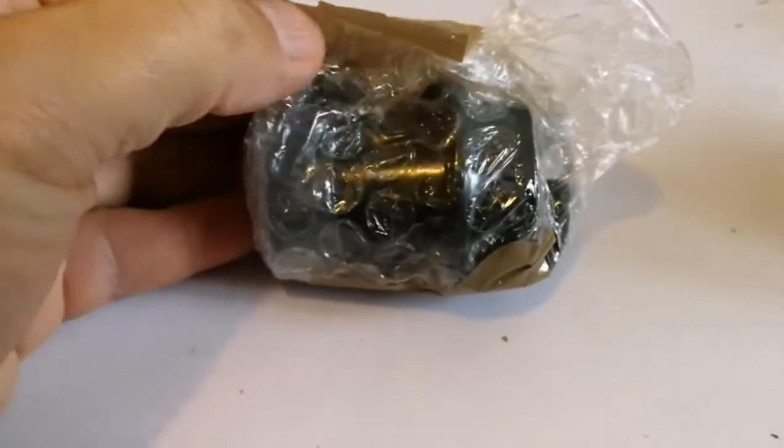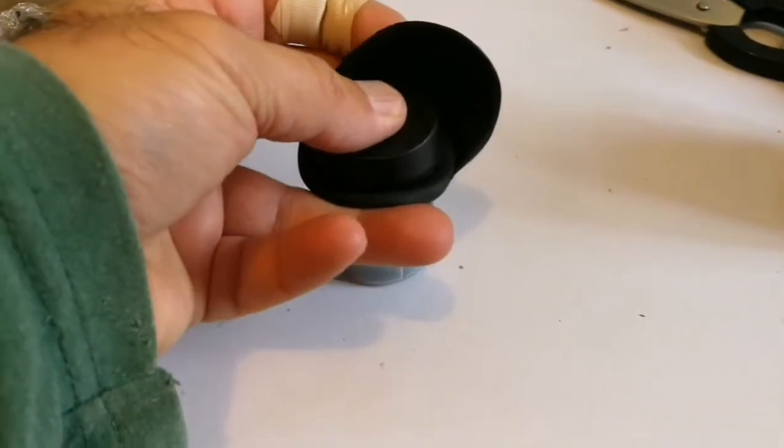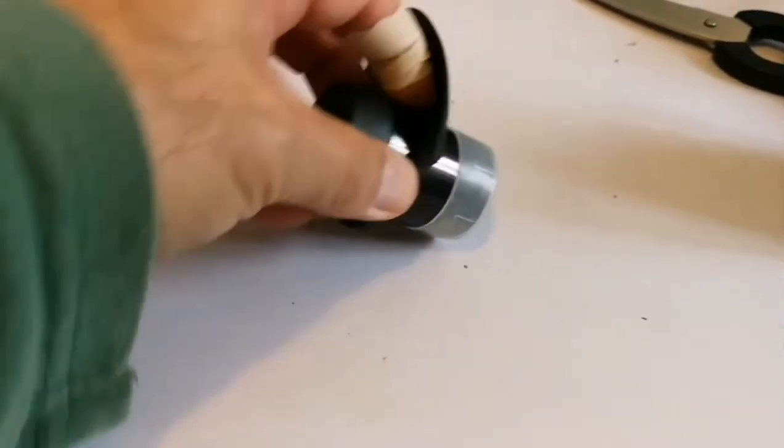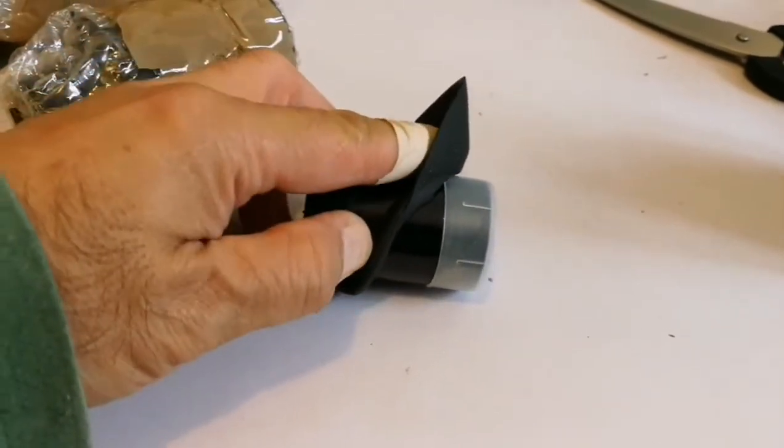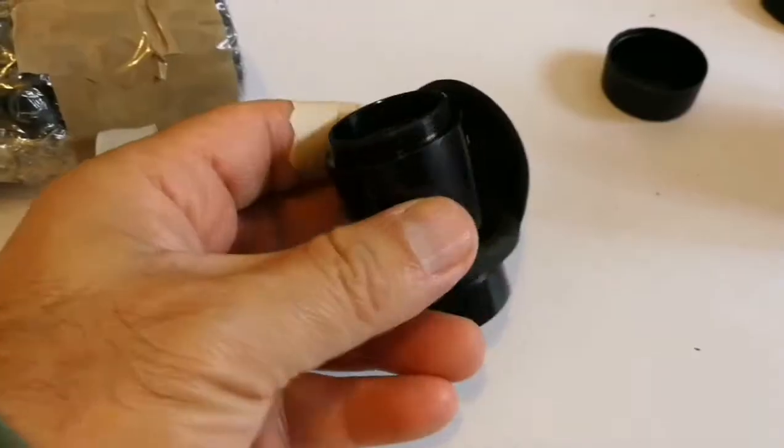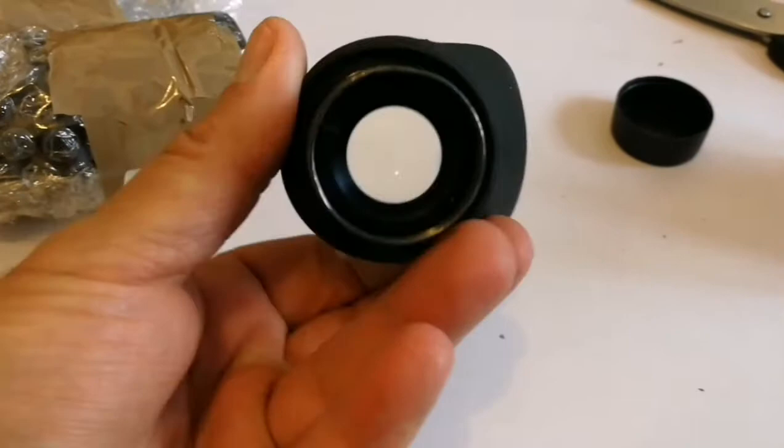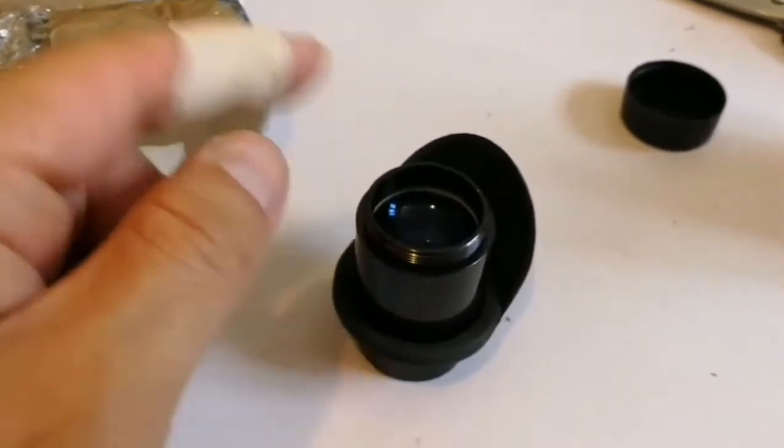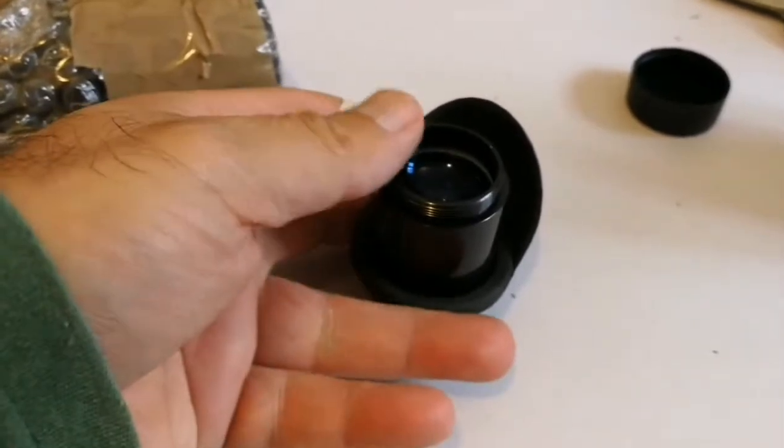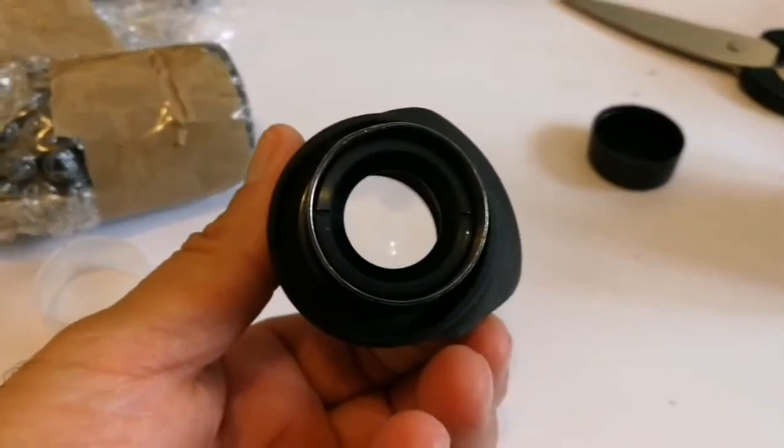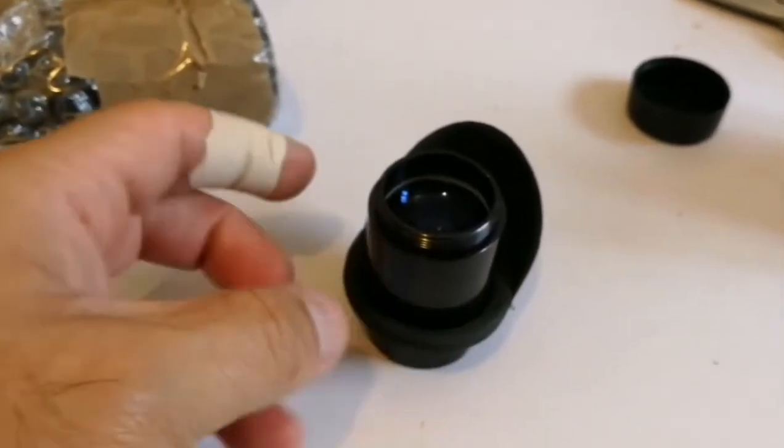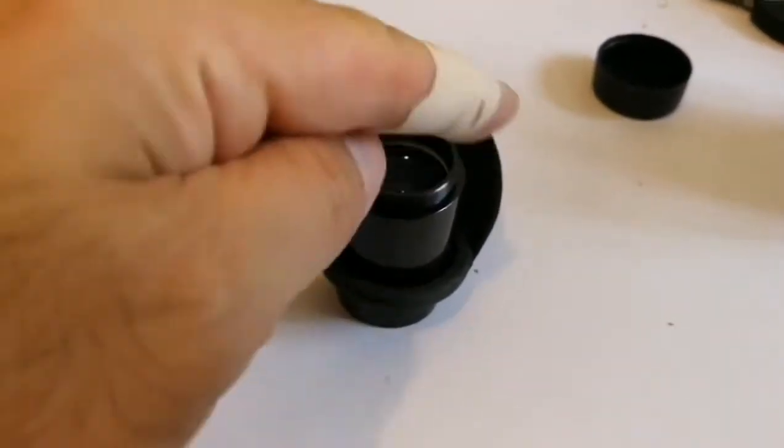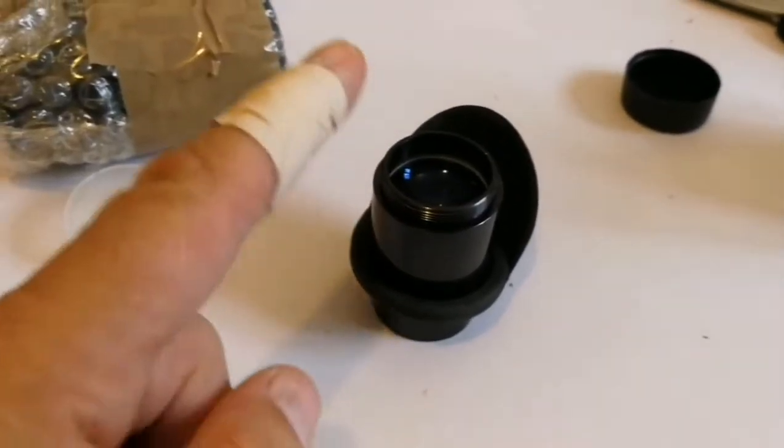Now it's the time for this. This is the Brandon eyepiece. This side is the eye side and that's the side that goes to the telescope. And this is the eye guard. I think there is a piece on top of this should be here, but I will find it.